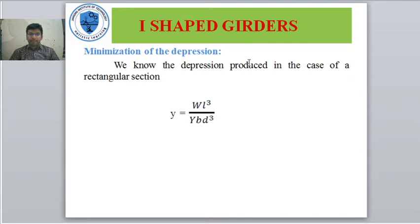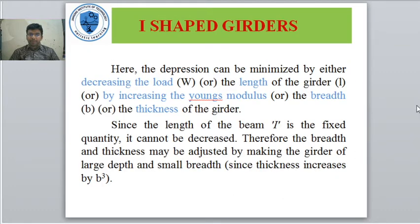Minimization of depression. The depression produced in the case of a rectangular cross section is given by δ = WL³ / YBD³. The depression can be minimized by either decreasing the load or the length of the girders, or by increasing the Young's modulus, breadth, or thickness of the girders.